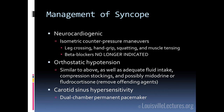Very briefly on management: for neurocardiogenic syncope, one thing we want to do is isometric counterpressure maneuvers — hand squeezing, leg crossing, muscle tensing — to try to increase venous return. Beta blockers, which were previously the treatment, are no longer recommended. These patients often have a prodrome, so they can tell it's coming on. If you can teach them the tools, they may be able to prevent the syncope from happening, besides obviously getting to a safe place first.